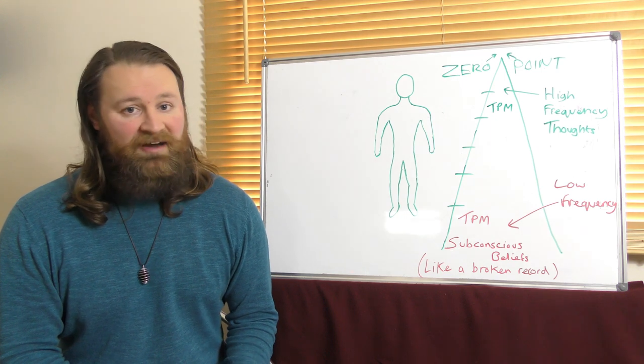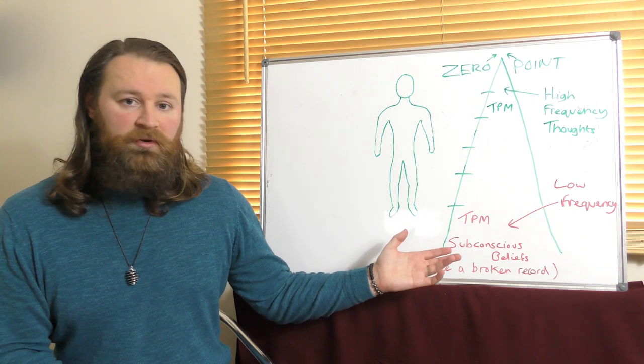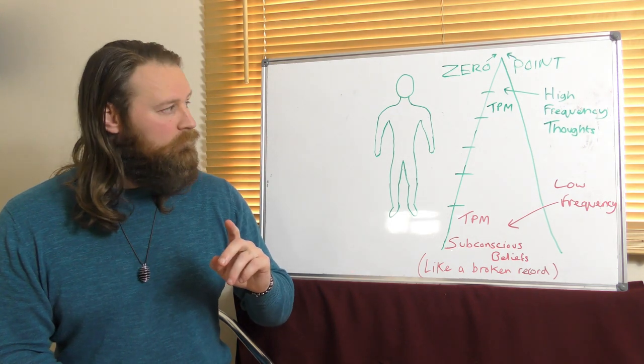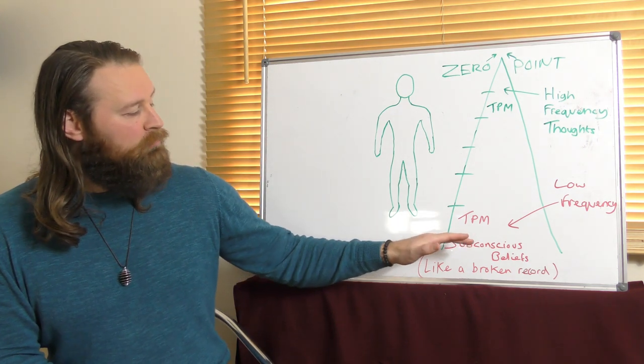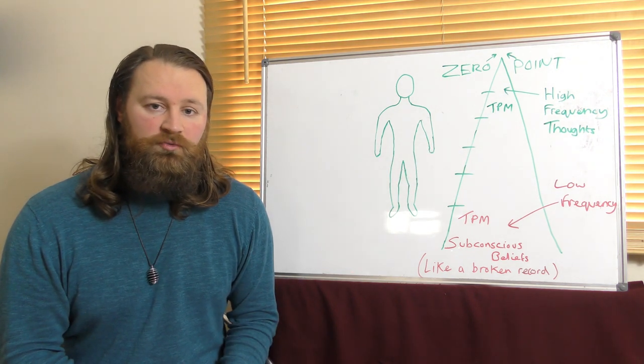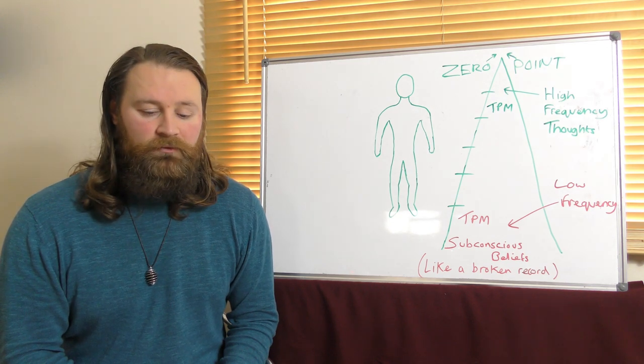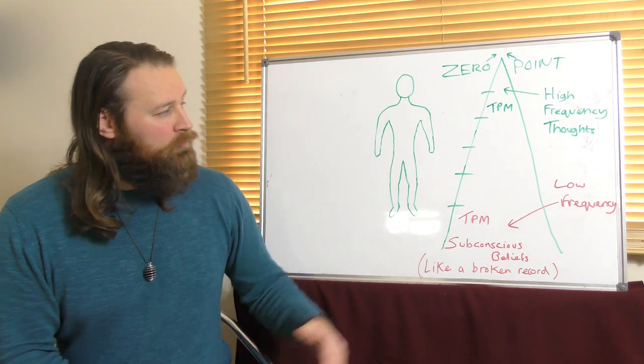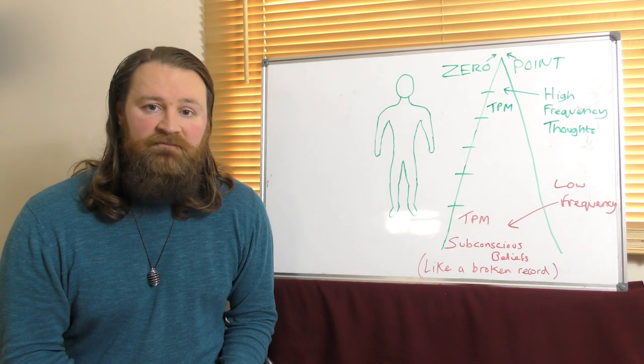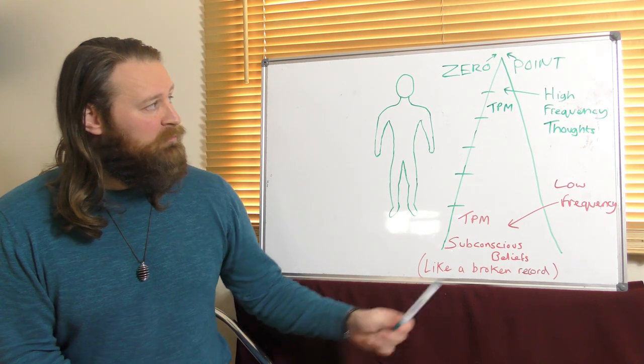the average person has about 30 to 60,000 thoughts every day. So how many thoughts they have per minute, well, they may be having, I don't know, maybe 100 thoughts per minute, let's say. That's a lot of thoughts in one minute. So as we become more awake, we find that we have fewer thoughts, and the thoughts that we do have are more quality, they're of a more high frequency. And we might move from 100 to having maybe just 5 to 10 pure thoughts in a minute, maybe less than even that.